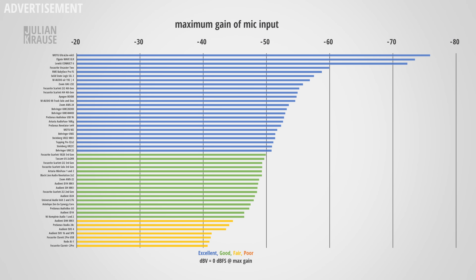One thing I noticed is that the maximum gain the Evo 16 and SP8 can provide is lower than on other interfaces. This isn't necessarily an issue as you can easily amplify the signal digitally in post-production, but in a live streaming setup where you don't have that option, some microphones — especially the SM7B — might be a bit quiet.